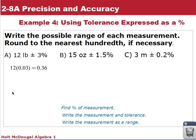Now we need to write the measurement and tolerance for this. So we can write the measurement as 12 plus or minus 0.36. So for our range, we have to take 12, and add 0.36 to it, and then take 12 and subtract 0.36 from it.